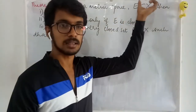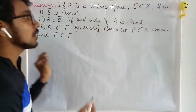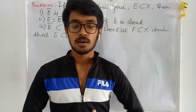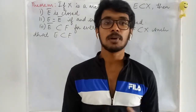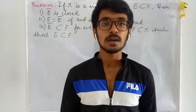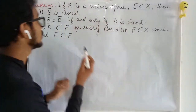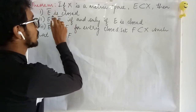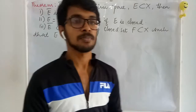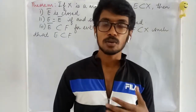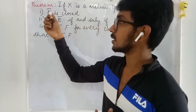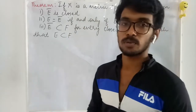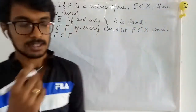In a metric space we have taken a set E, and with the help of this E we are going to prove two things: first, that the closure of E is always a closed set — meaning all limit points of E-bar are members of E-bar; and second, that a set is closed if and only if it equals its own closure.